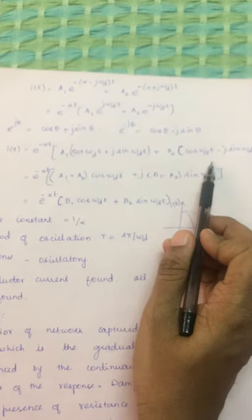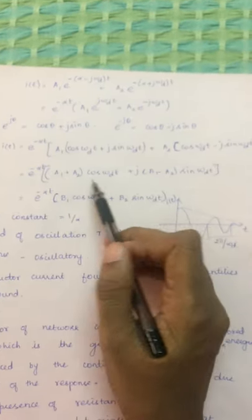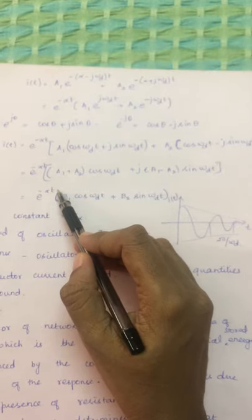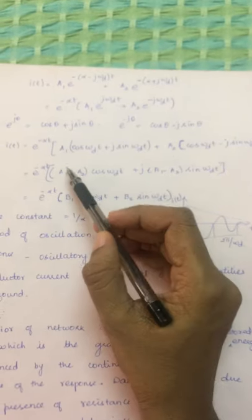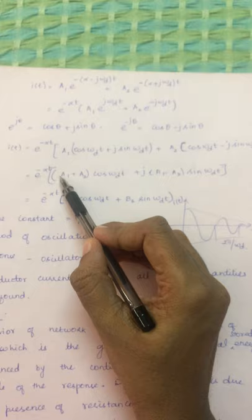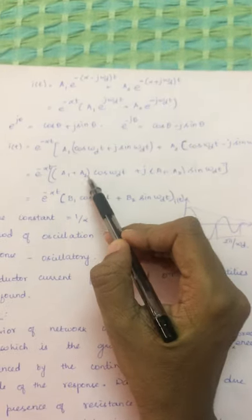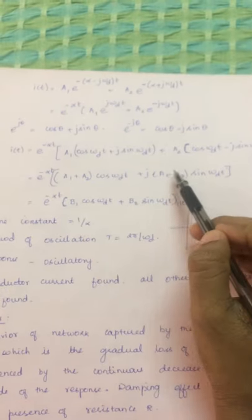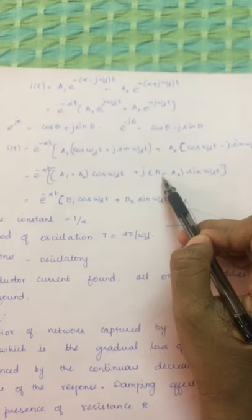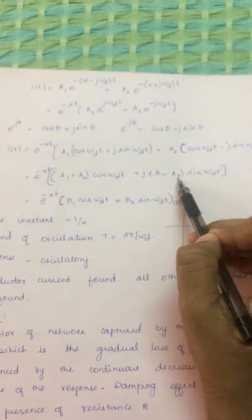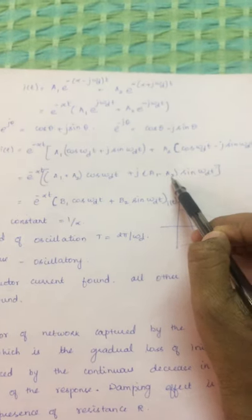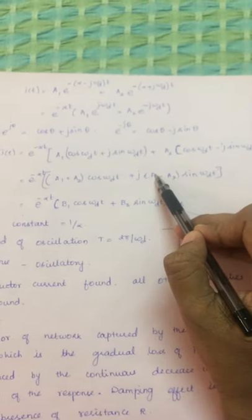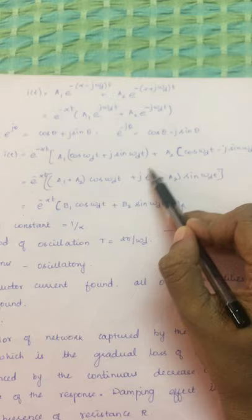Simplifying, we get e^(-alpha*t) times (A1 + A2). Since A1 and A2 are constants, we can take this together as another constant, b1. Similarly, A1 - A2 becomes another constant, b2.